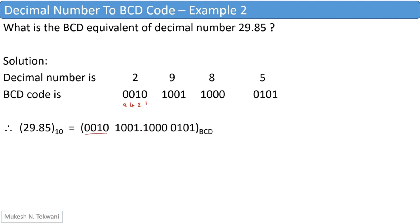We can express the BCD code for 29.85 as: 0010 1001 . 1000 0101, with a point placed between the groups for 9 and 8 to represent the decimal point. We put the subscript BCD to indicate that this is the number in the BCD system.